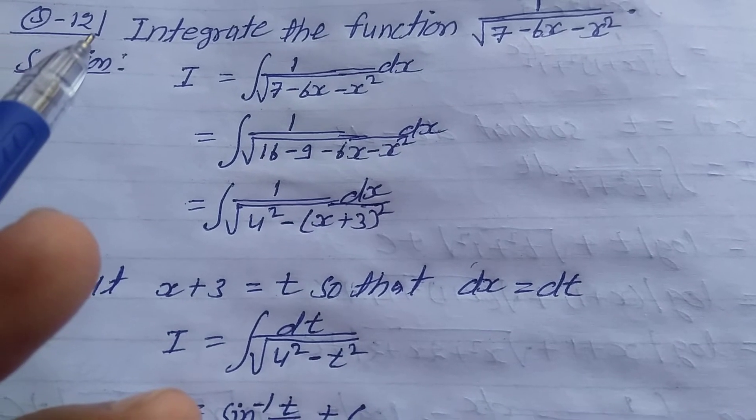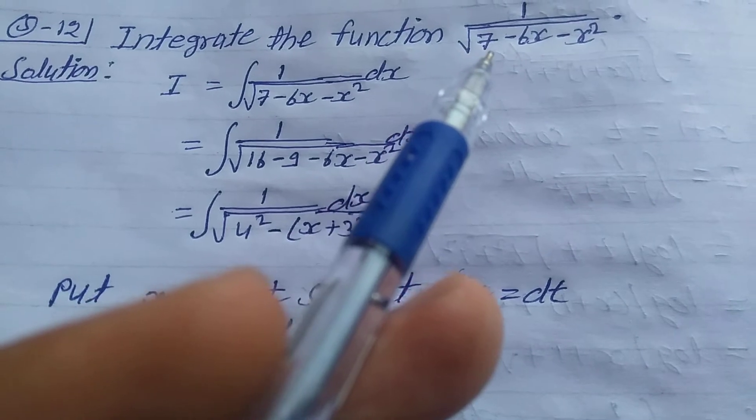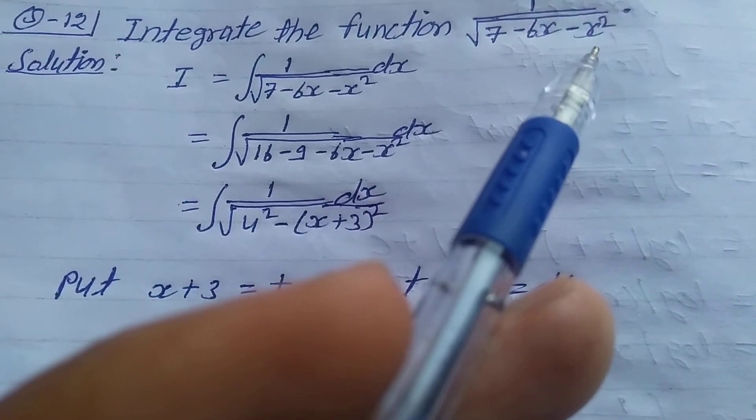Explanation number 12, exercise 7.4, class 12. Integrate the function 1 upon root of 7 minus 6x minus x square.